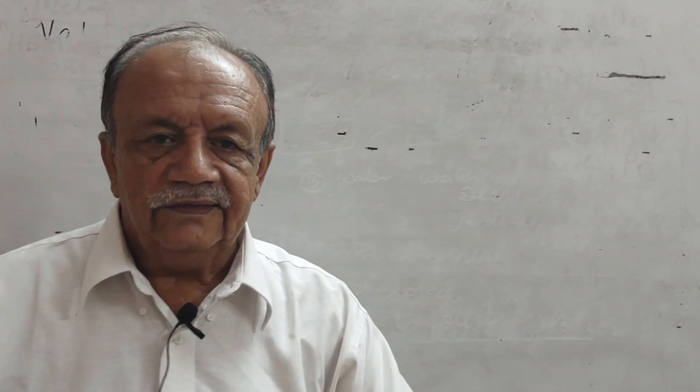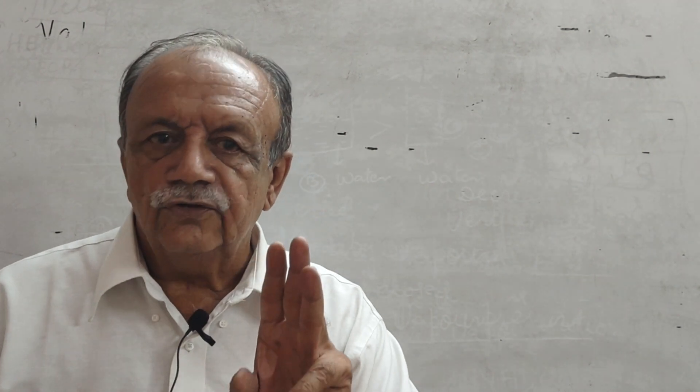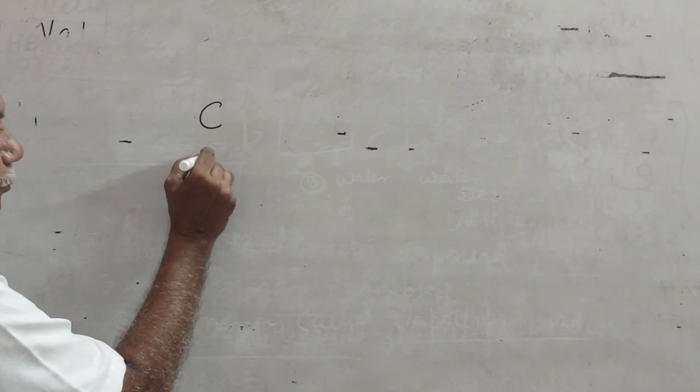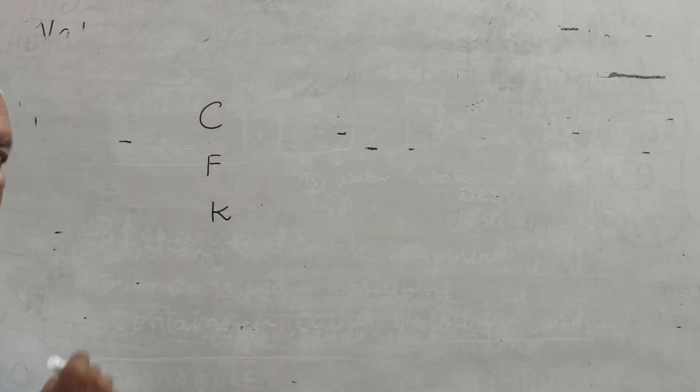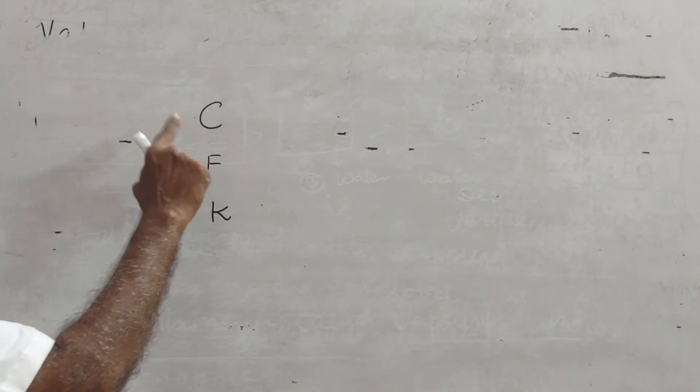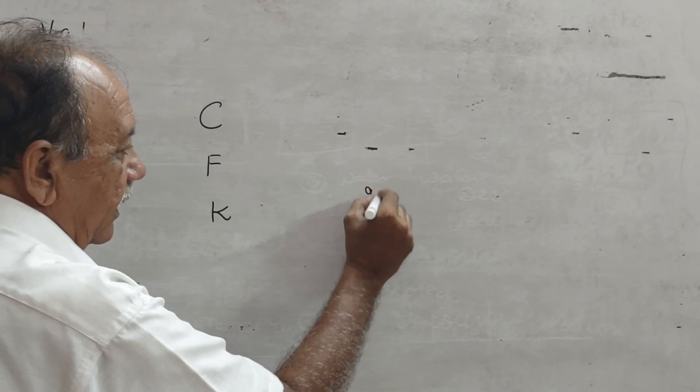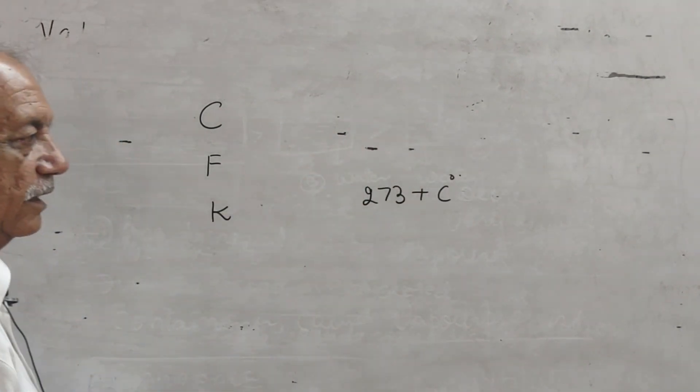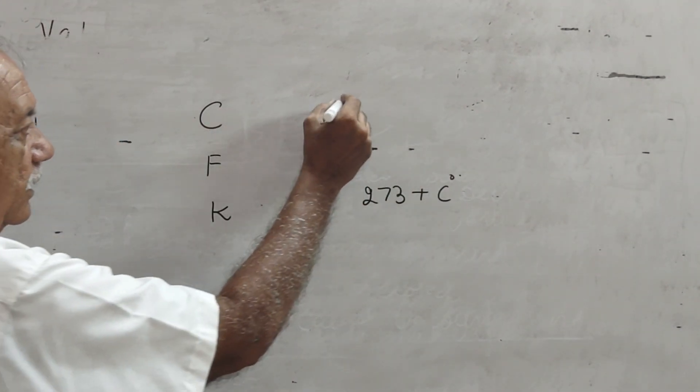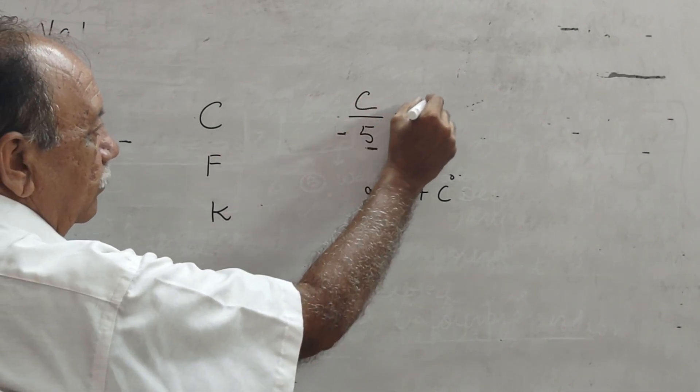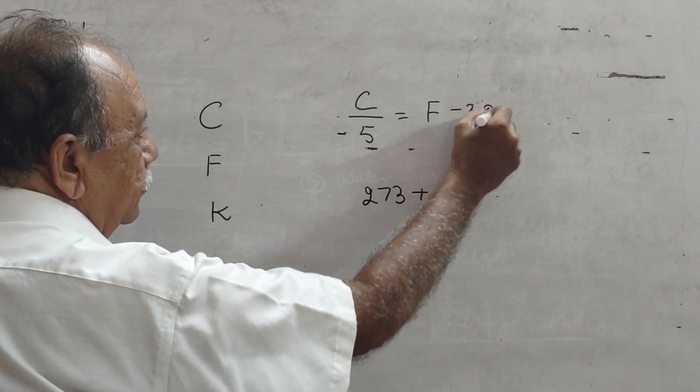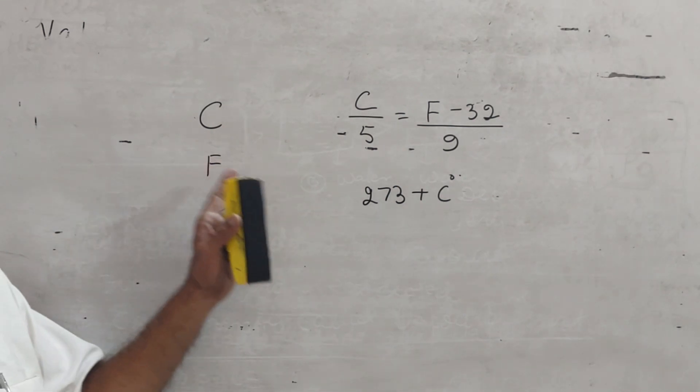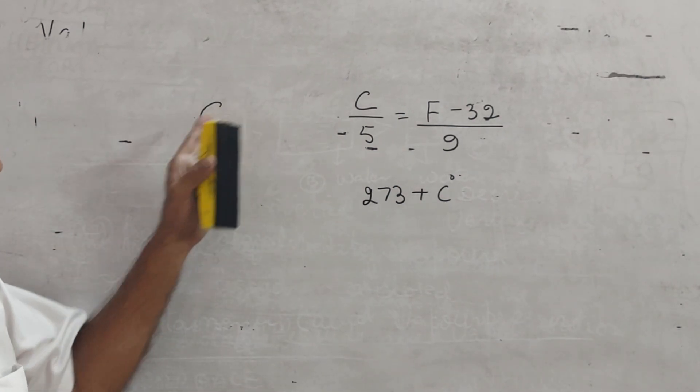Again, there are three types of scales to measure the temperature. What are those scales? Centigrade, Fahrenheit and Kelvin. When centigrade is to be converted into Kelvin, add 273 plus centigrade. Relation between centigrade and Fahrenheit is C by 5 equal to F minus 32 upon 9. In this way, we can convert any temperature into any relation.